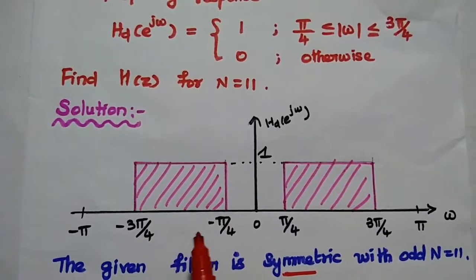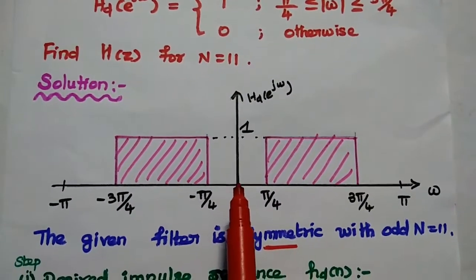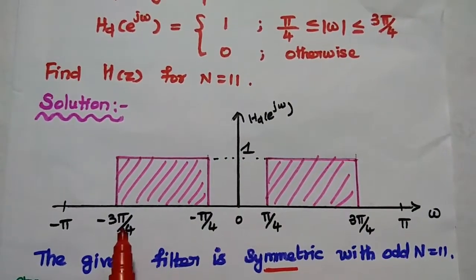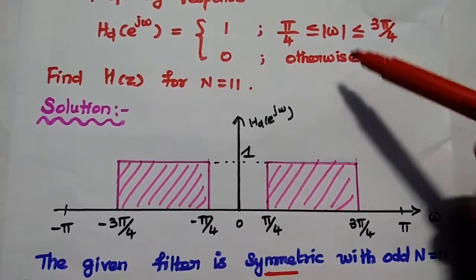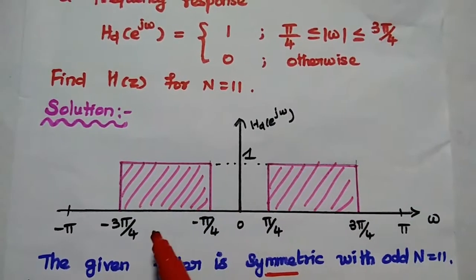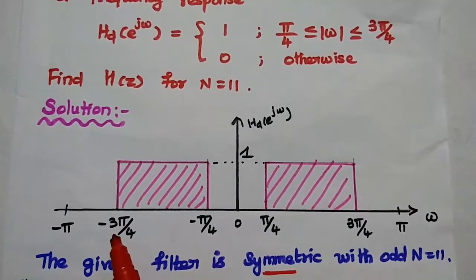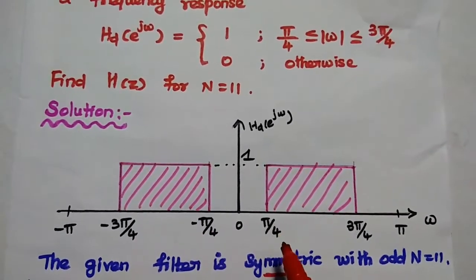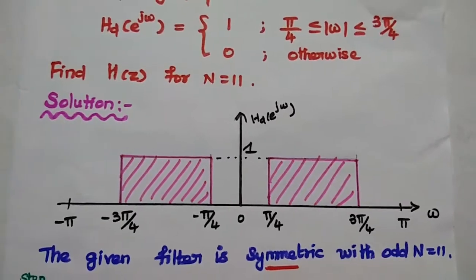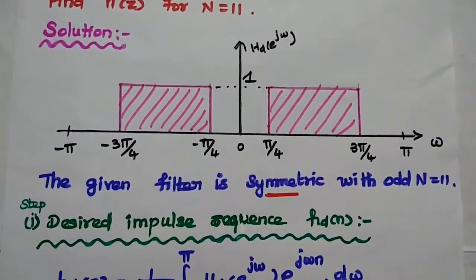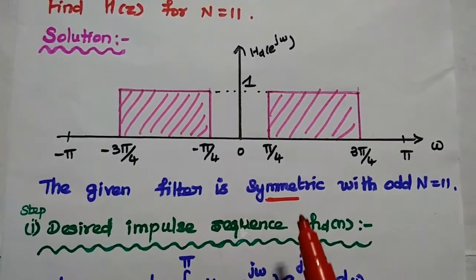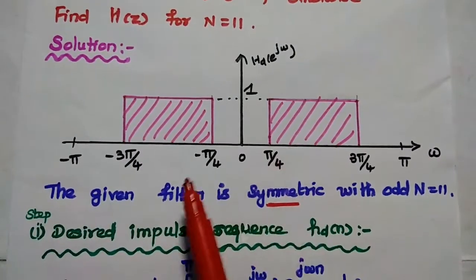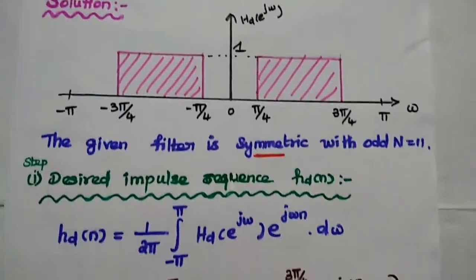In the solution part, first we have to draw the frequency response diagram for the given data. It has the value 1 from -3π/4 to -π/4. As this modulus sign represents both the negative and positive sides, we take the negative side from -3π/4 to -π/4 and then π/4 to +3π/4. From this diagram we can see that the given filter is a symmetric filter — with respect to 0, both sides are exactly the same.